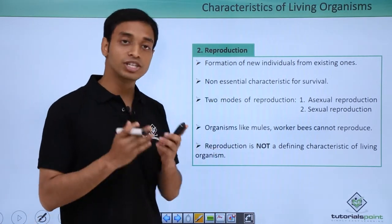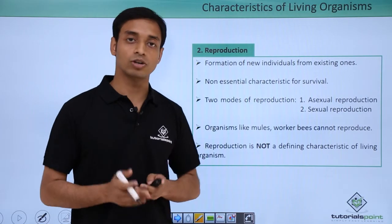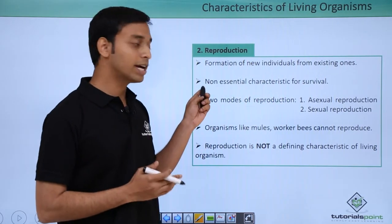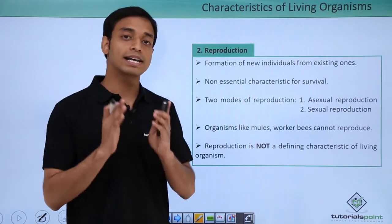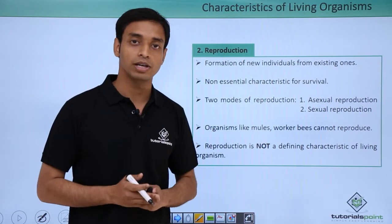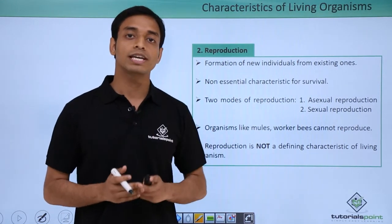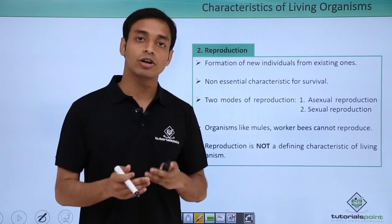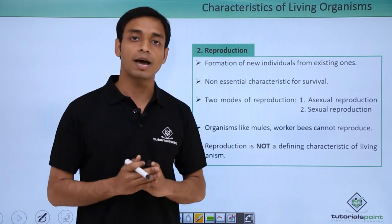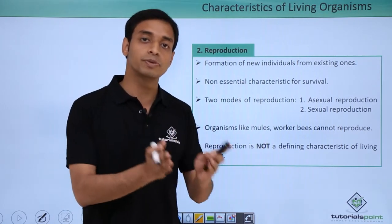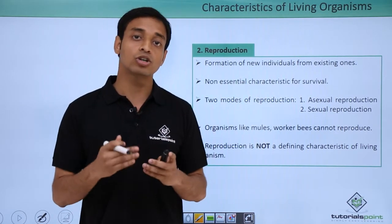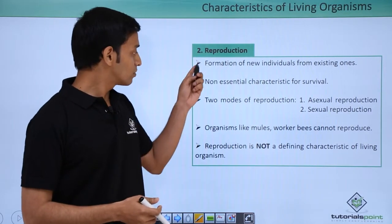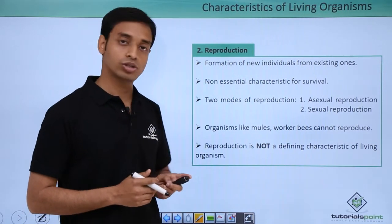The next characteristic is reproduction. Reproduction is the formation of new individuals from existing ones — that is, from parents to offspring. Reproduction is not at all an essential characteristic for survival because if an organism does not reproduce, it is not going to perish or die. What will happen is that the organism's species would not be proliferated on Earth anymore.